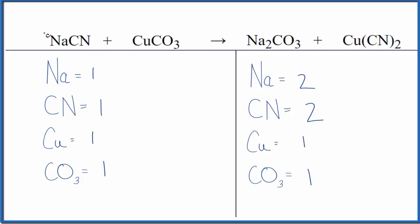We can see that if we put a two in front of the sodium cyanide, one times two, that'll give us two of those. And then the cyanide, one cyanide times two, two of those. We're done. This equation is balanced.